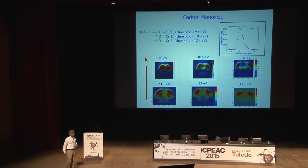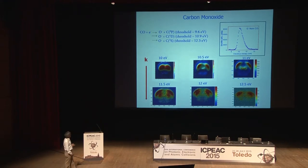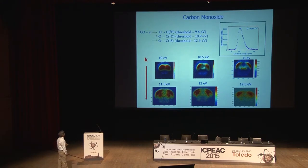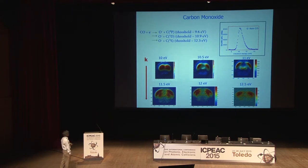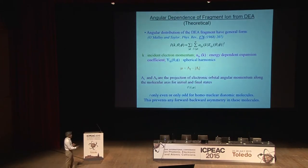For carbon monoxide, the angular distribution of O minus from the DEA process was studied by Hall in the late 1970s in Paris. They showed two processes with O minus being ejected mostly in the backward direction. This is a resonance peaking around 10 eV with a sharp onset and slow decay for the O minus yield curve. Our momentum images of O minus show two thresholds for triplet P and singlet D states; initially only singlet P and triplet P, then singlet D evolving, and a third contribution at 12.3 eV as a small blob at higher energies.